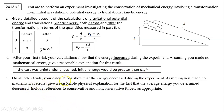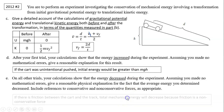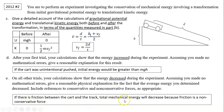On other trials, calculations showed that energy decreased during the experiment using your measurements of d and t. Assuming no mathematical errors, give a reasonable physical explanation — including reference to conservative and non-conservative forces. Most likely it's because the track has friction. If there is friction, total mechanical energy will decrease because friction is a non-conservative force that takes energy away. That's it — I hope it helps. Thanks for watching, see you next time.